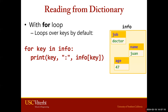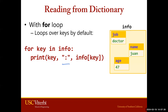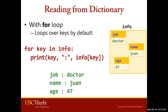If we want to read values from an entire dictionary, we can use a for loop. Here we see: for key in info. The variable key will represent a different key in each iteration. Within our for loop, we're printing our key, a colon, and then accessing the value. Running this, we'll see: job colon doctor, name colon Juan, age colon 47.